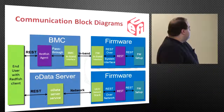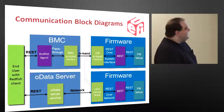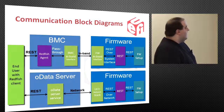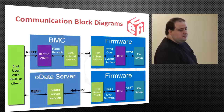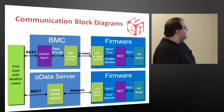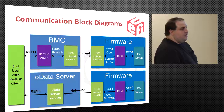The whole flow starts with the end user with a Redfish client. We have a BMC and firmware. The end user talks to the BMC using REST, which has a Redfish agent. It talks through pass-through into the BMC in-band interface, and through in-band it talks to the firmware. The firmware in-band interface then uses REST over the system interface and REST to the firmware setup.